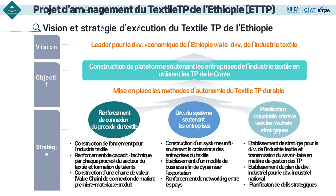Voici la vision et stratégie d'exécution du Textile Technoparc de l'Éthiopie. La première stratégie consiste à construire une chaîne de valeurs reliant les matières premières, les matériaux et les produits en renforçant les capacités techniques pour chaque procédé et en formant une main-d'œuvre professionnelle. La deuxième consiste à établir un système intégré de soutien aux entreprises pour soutenir la croissance des entreprises textiles et développer un système intégré en renforçant le networking national et international.